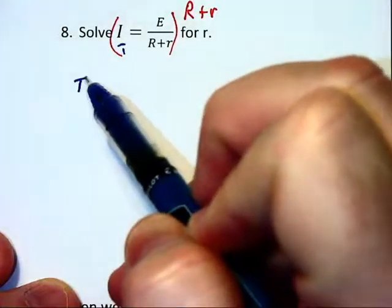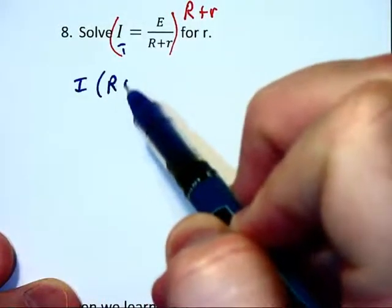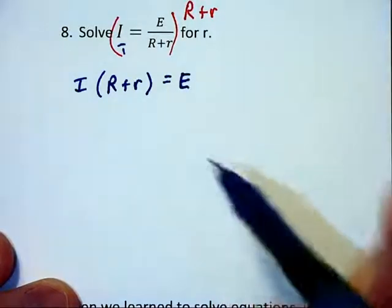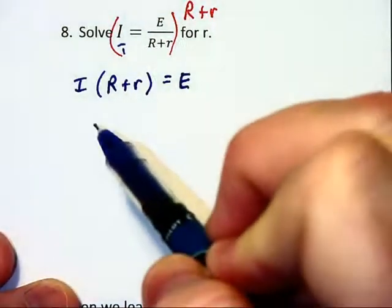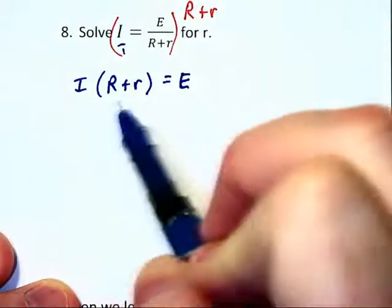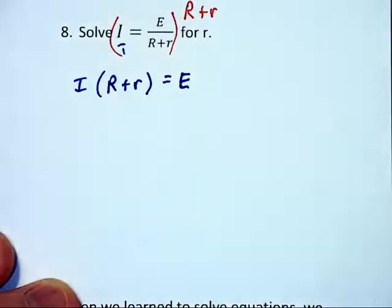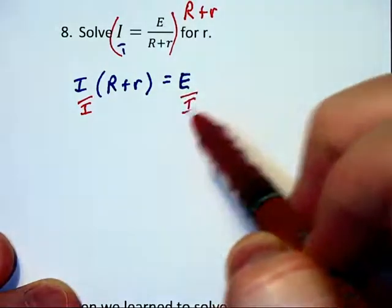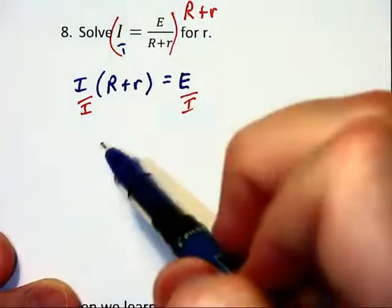So on the left we are going to have capital I times capital R plus little r equals capital E. Distributing on the left we are going to have, actually let's not distribute on the left, let's instead divide off the i because that will just give us the r plus r on the left the way we want it.